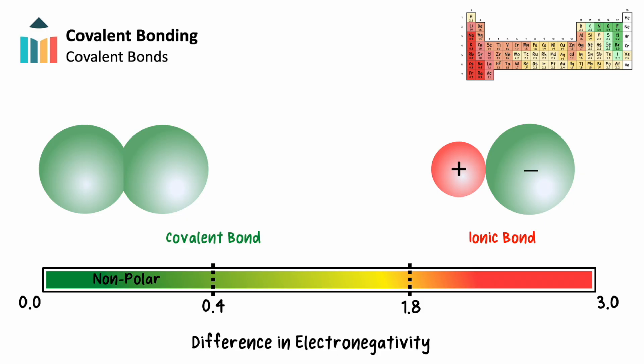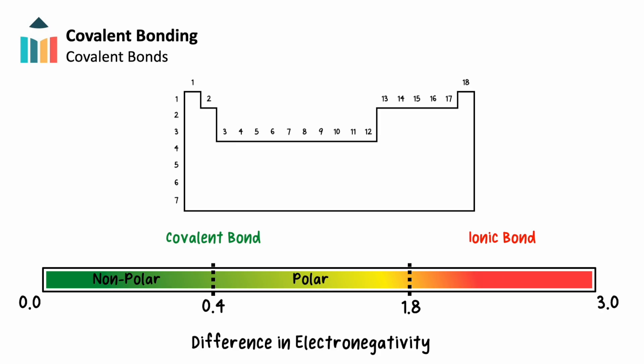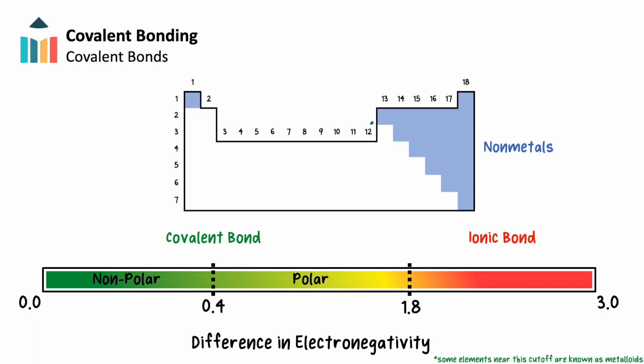Differences in electronegativity between 0.4 and 1.8 create polar covalent bonds, where electrons are shared unequally, with one atom drawing in the electrons more than the other. In reference to the periodic table, ionic bonds are typically formed between metals and nonmetals, while covalent bonds are formed between two nonmetals.